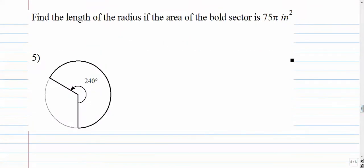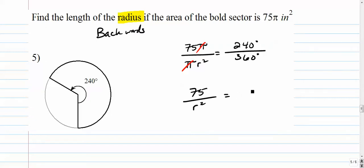Number 5. We're going to go a little bit backwards here. This is sector area backwards. So I'm looking for, in this case, the radius. I'm given the sector area is 75 pi. So that goes up top. Pi r squared in the bottom. The angle is 240 over 360. Now before we go any further, anytime you can see a pi cancel on top and bottom, you should do it. So that leaves us 75 over r squared is equal to 240 over 360.